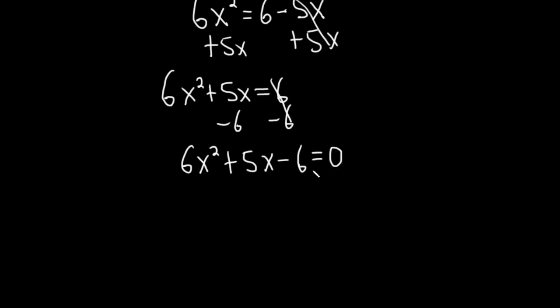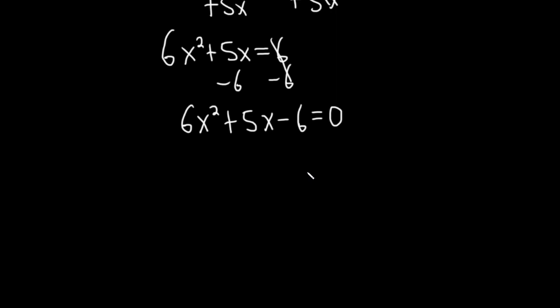And so now we have to try to factor this. So we have two approaches we can really take. We can use guessing, or we can use something called the AC method. Let's use the AC method. The AC method says that you multiply these two numbers. So 6 times negative 6, that's equal to negative 36. And then we need the following.